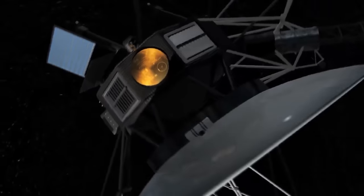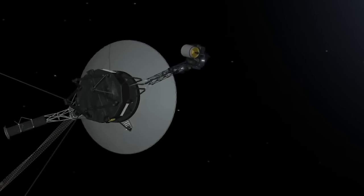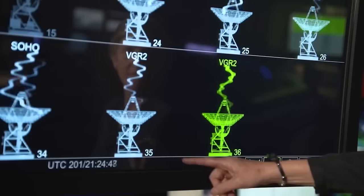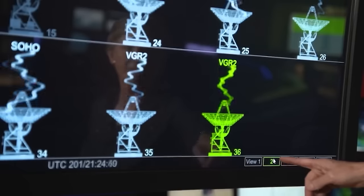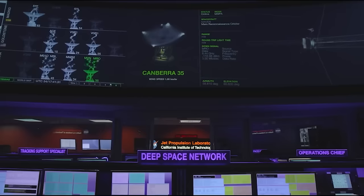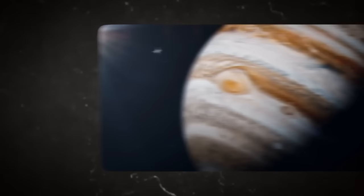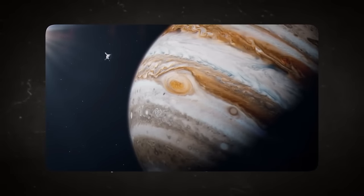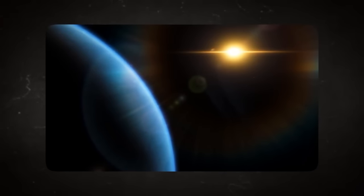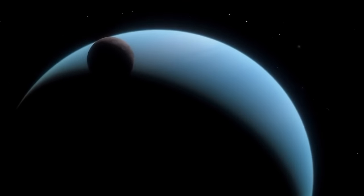It seems like the Voyager 1 flight data system is presently in a loop, like something out of Groundhog Day. When the telecoms unit of the flight data system started transmitting back a pattern of ones and zeros, as if it were stuck in a loop, the mission team initially recognized the problem late last year. Due to an issue with the communications unit, Voyager 1 is unable to communicate any scientific or engineering data back to Earth, while the spacecraft may still receive and execute orders sent by the mission team.